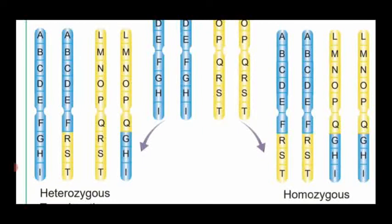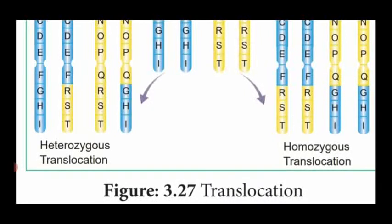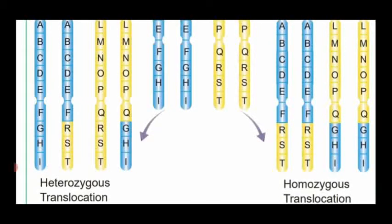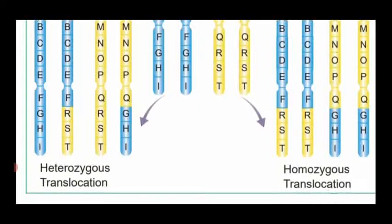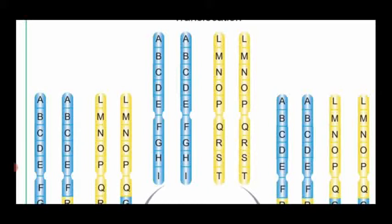In the diagram for translocation, homocygous shows rearrangement of segments in two pairs of chromosomes. In heterocygous, the exchange of segments takes place only between two non-homologous chromosomes, while the other two retain the original arrangement. After reviewing these diagrams from the previous class, today we are going to see the topic DNA replication.